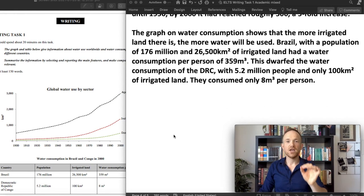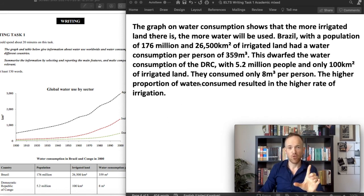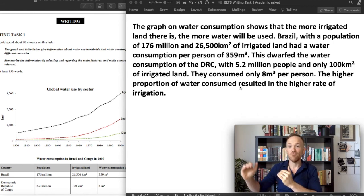Going to the final paragraph. The graph on water consumption shows that the more irrigated land there is, the more water will be used. Brazil, with a population of 176 million and 26,500 kilometers of irrigated land, had a water consumption per person of 359. This dwarfed water consumption of the Democratic Republic of Congo, with 5.2 million people, and only this amount, they consumed only eight per person. Now I've added in this last sentence, the higher proportion of water consumed resulted in the higher rate of irrigation. Not totally necessary, but I've added that in just to make it a little bit tighter and a lot clearer. So, I've pointed out that the more irrigation there is, the more consumption there will be per person.